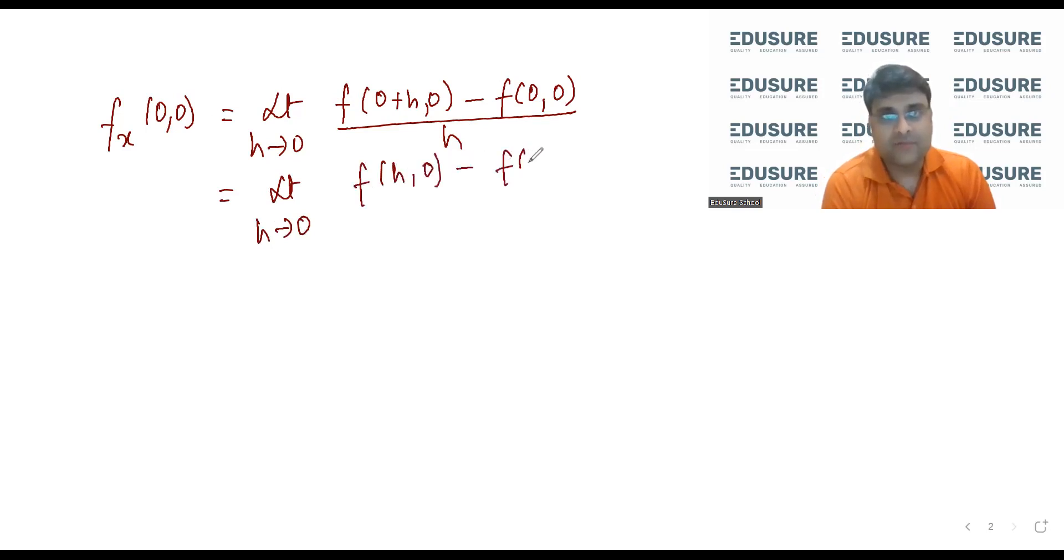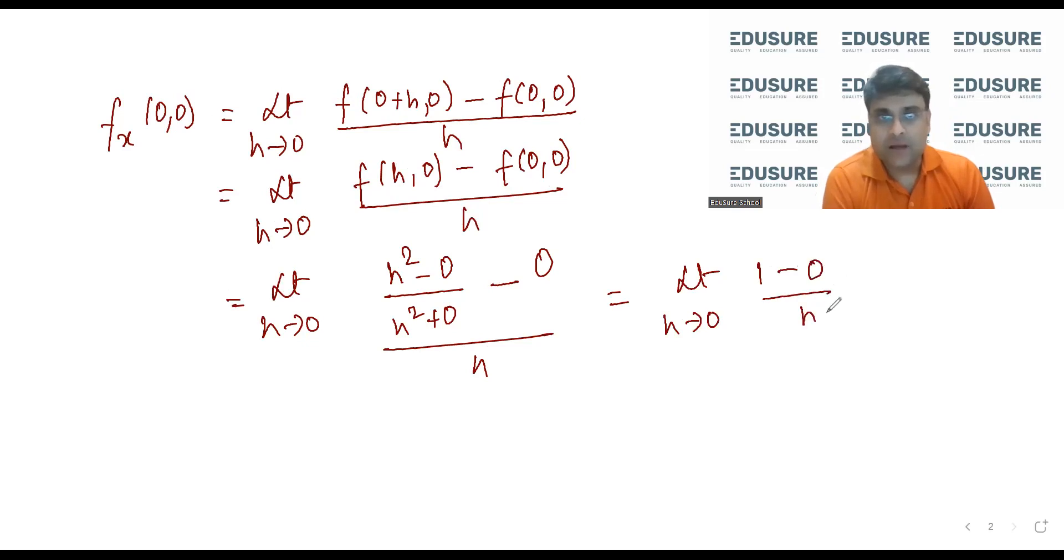f(h,0) minus f(0,0) by h. So h square minus 0 by h square plus 0, f(0,0) value 0, by h. This will be limit h tends to 0, 1 minus 0 by h. So limit h tends to 0, this is 1 by 0 format. 1 by 0 format means limit does not exist. So fx at (0,0) limit does not exist.